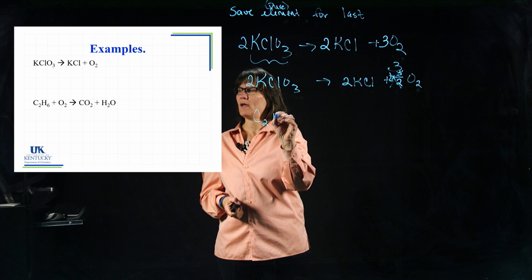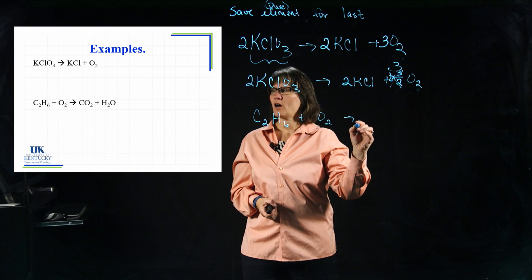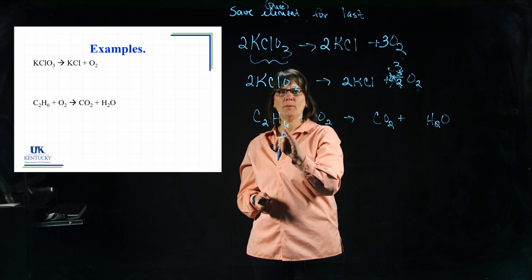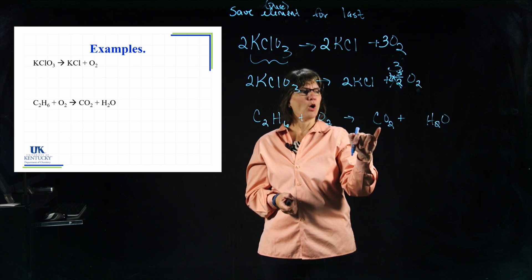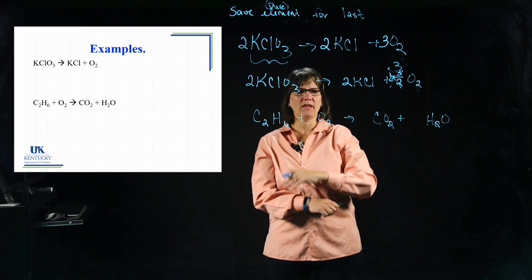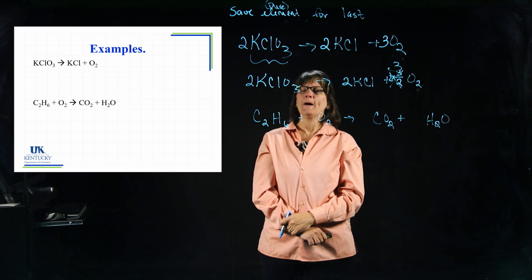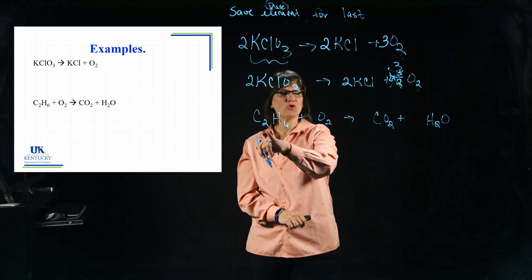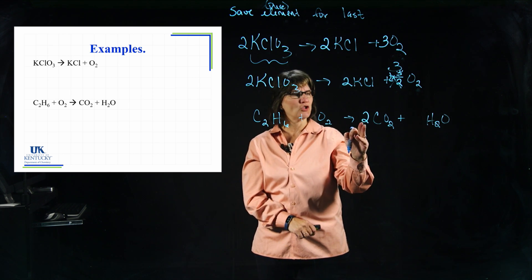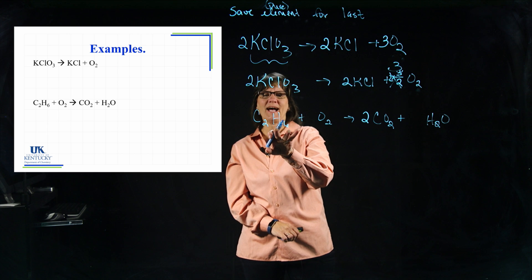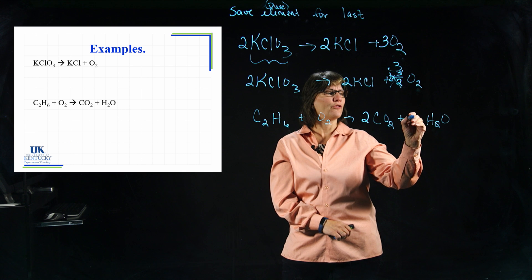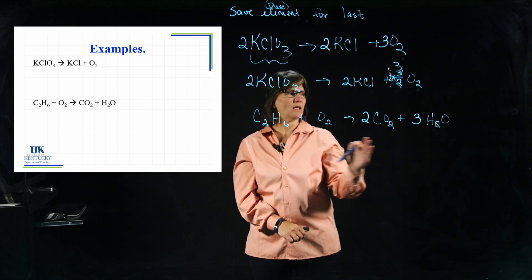This is the reaction for the complete combustion of a hydrocarbon — a compound with only hydrogen and carbon. When a hydrocarbon reacts with oxygen it always gives you CO2 and H2O if it's complete combustion. This is what gasoline, oil, and acetylene do. Let's balance it: start with carbon — I have two carbons on the left, so I put a 2 in front of CO2, giving two carbons. Now balance hydrogen: I have six hydrogens on the left. Putting a 3 in front of H2O gives three times two equals six hydrogens on the right.